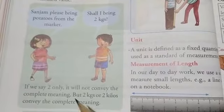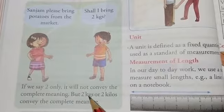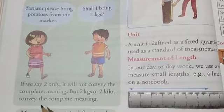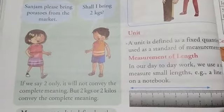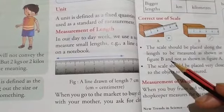So if we say 2 only, 5 only, then it will not convey the complete meaning. But 2 kilograms or 2 kilos will convey the complete meaning. So a unit is required for the measurement of a physical quantity.